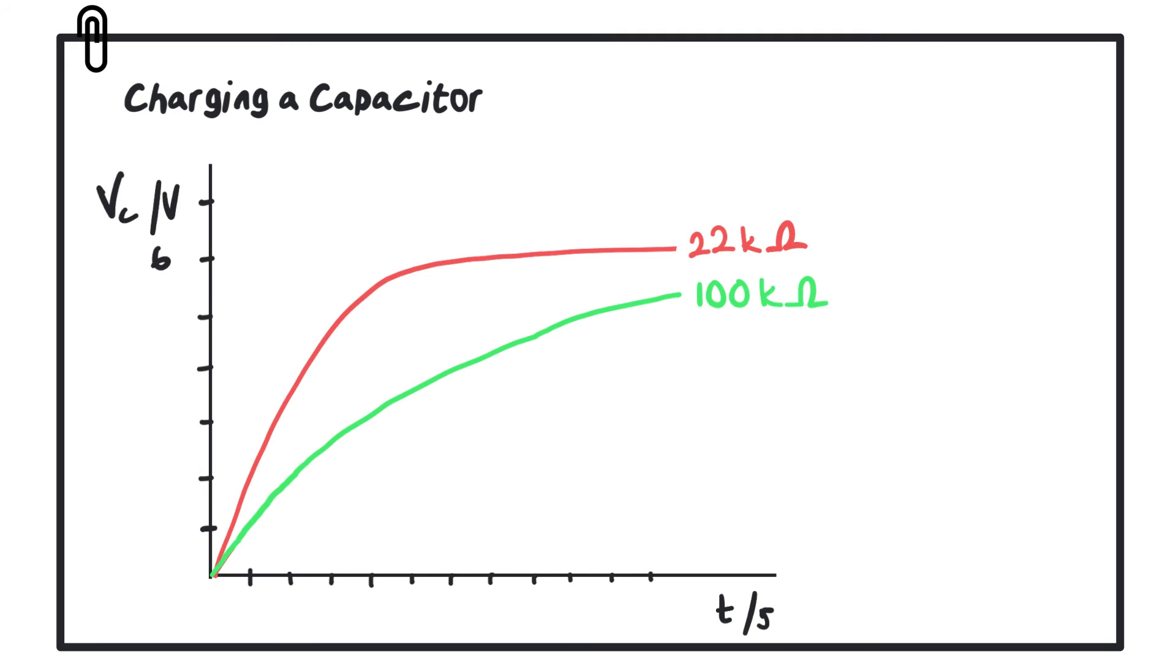So our graph should look something similar to this. I'm going to add in a line to this graph and that is the EMF of the cell. Remember that charging the capacitor stops whenever the voltage across the capacitor is equal to the EMF of the cell, which in this case was just above 6 volts. So that value there is the EMF of the battery.